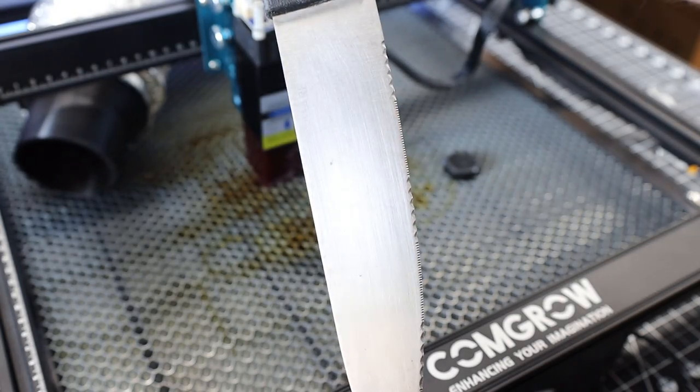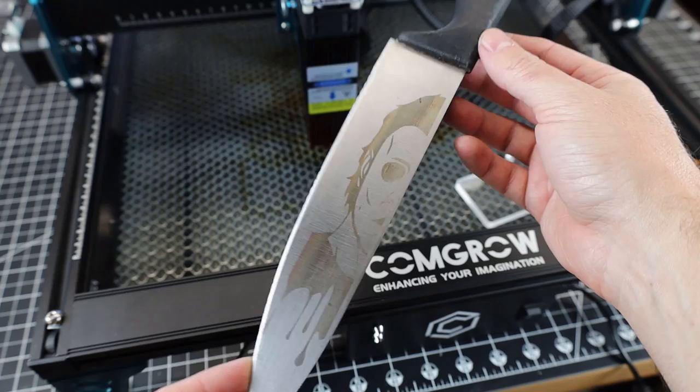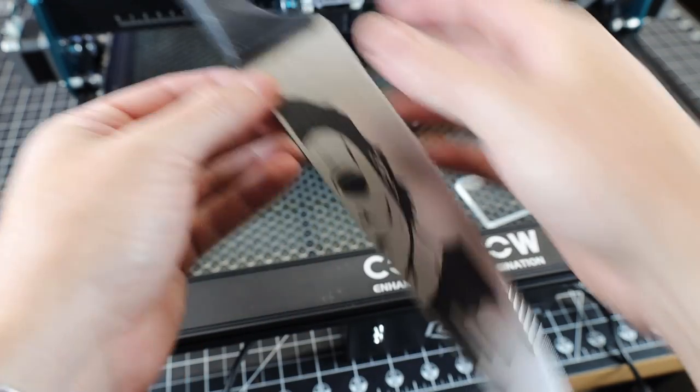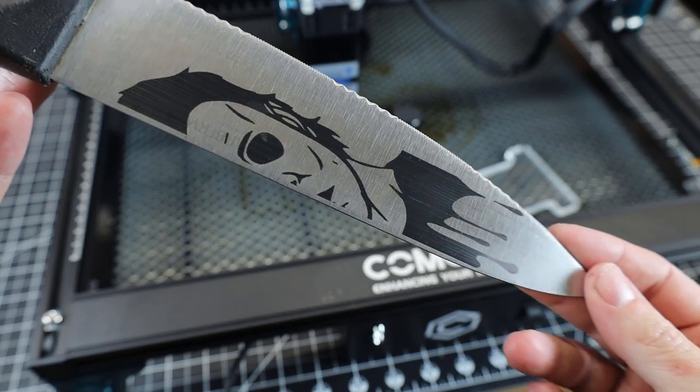And this marked the metal, but it didn't do it as dark as I wanted it to, so I redid it just at a slower speed, and it looks much better. And there's still some fine-tuning I need to do to get rid of some of these lines in it, but it looks pretty good.